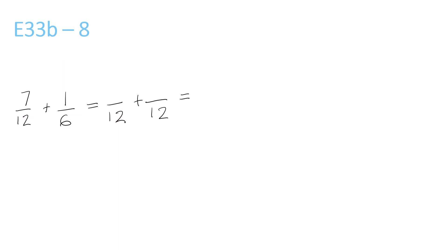Both go into 12. 7 over 12 stays the same. 6 times 2 is 12, so 1 times 2 is 2. So 7 plus 2 is 9 over 12, which means we divide the top and bottom by 3. 9 divided by 3 is 3, and 12 divided by 3 is 4.